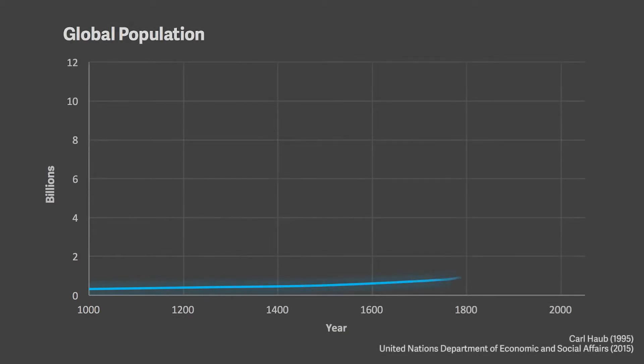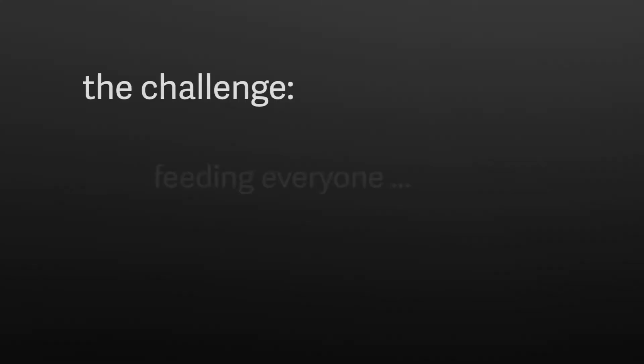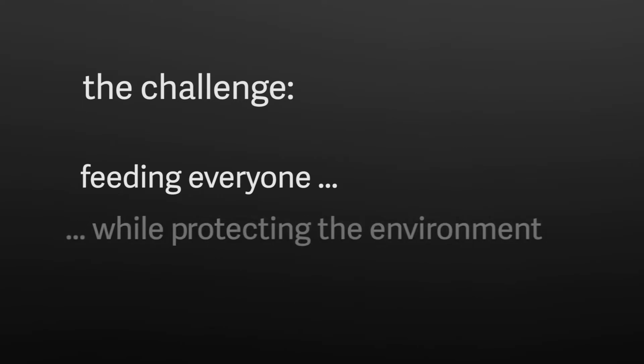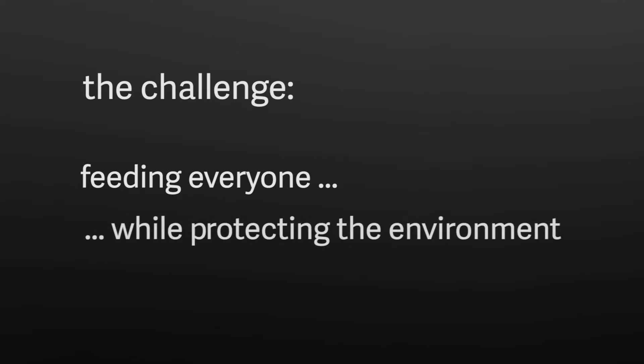There are already 7 billion people on the planet, and we're expecting another 2 billion to join us in the next 30 years. Feeding all of us is a big environmental challenge because growing food requires natural resources like land and water.